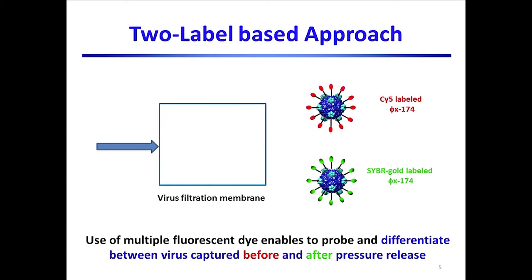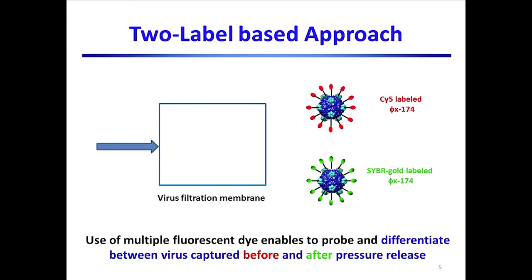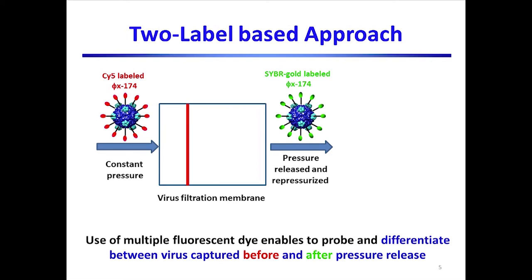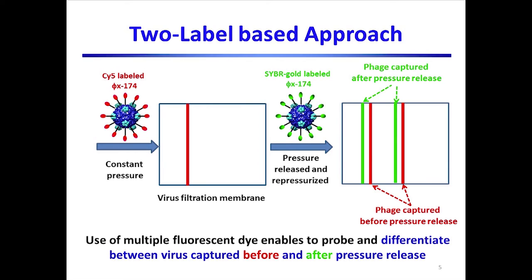In the current work, we developed a novel approach to study virus capture after a process disruption. We labeled two batches of phage, one with Cy5, which is a red fluorescent dye, and one with Cybergold, which is a green fluorescent dye. The virus filtration experiment was performed by initially challenging the filter with red labeled phage. The pressure was released and then the filter was challenged with the green labeled phage. Confocal images were then obtained using different lasers to selectively excite the red and green virus. By using viruses with different fluorescent dyes, we were able to differentiate between virus captured during the initial challenge and those captured after the pressure disruption.